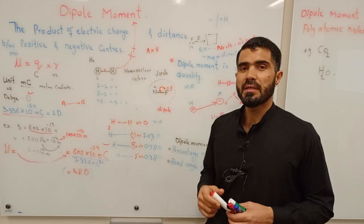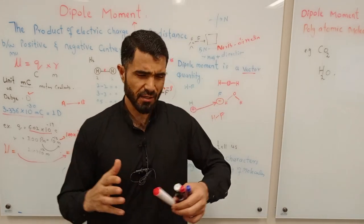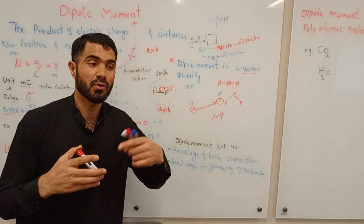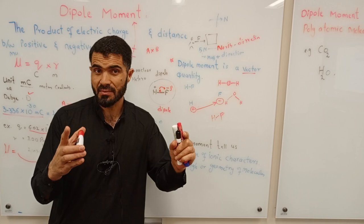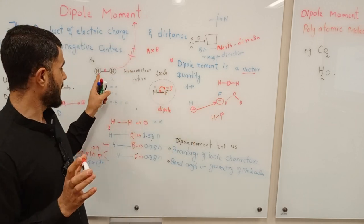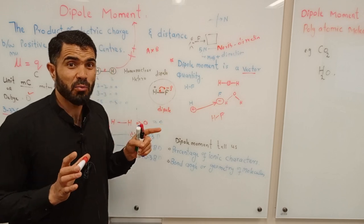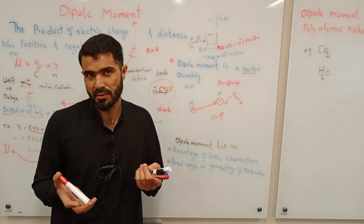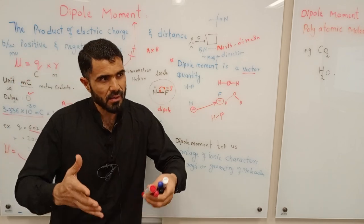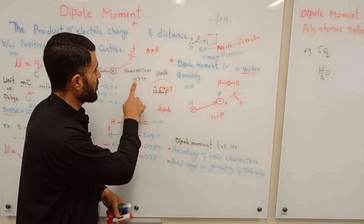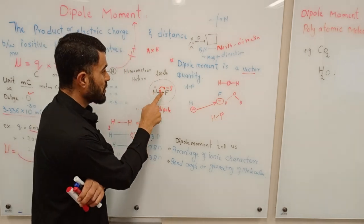The idea of dipole moment arises from molecules. Molecules are of two types. One is homonuclear molecules — a homonuclear molecule is one where the two bonded atoms are the same, like H₂. In such molecules, the concept of dipole moment is nil; there is no dipole moment. The concept of dipole moment arises in another kind: heteroatomic molecules, where the bonded atoms are different — for example, hydrogen fluoride (HF).